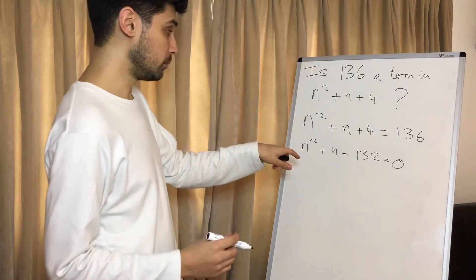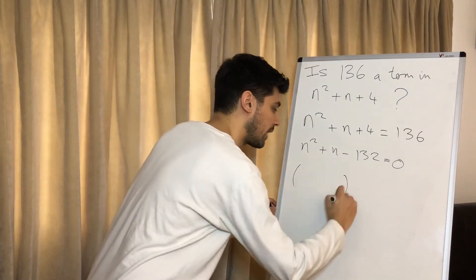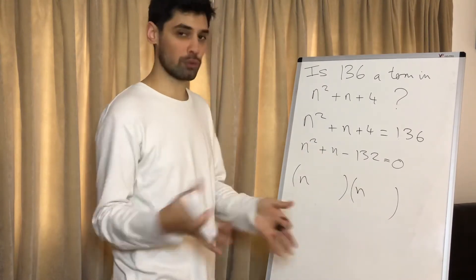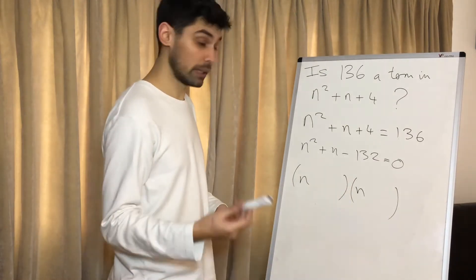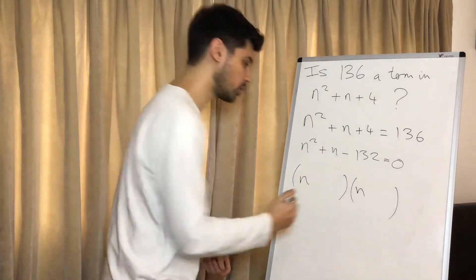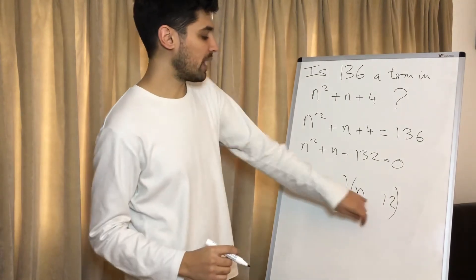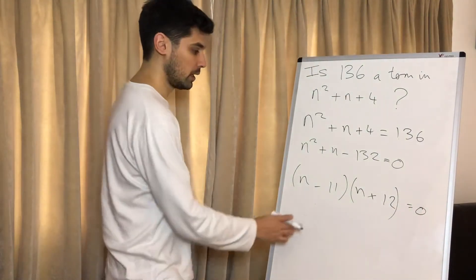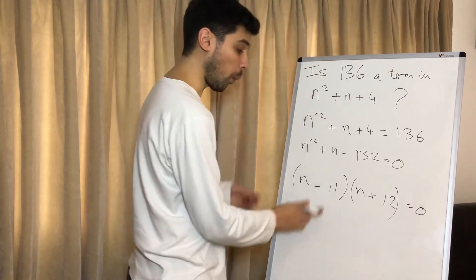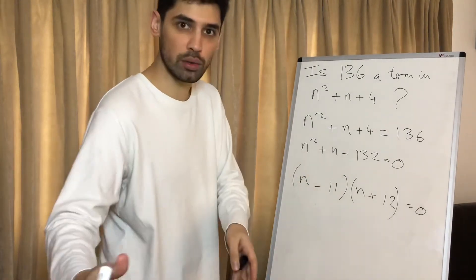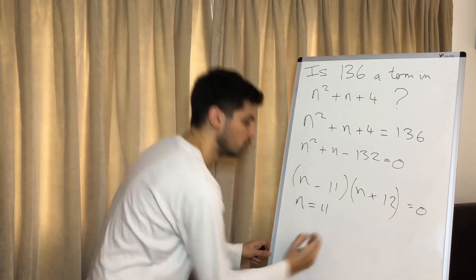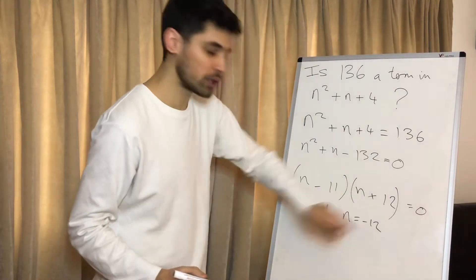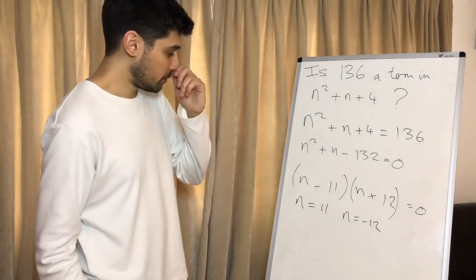We make it equal to 0: minus 136 gives us n squared plus n minus 132 equals 0. When factorising, we write two brackets — n and n — and find two numbers that multiply to make 132 and add or subtract to make 1. Numbers that times together to make 132: 11 and 12 — can they add or subtract to make 1? Yes. So what combination of 11 and 12 makes positive 1? That's going to be minus 11 plus 12. So our factorised form is (n minus 11)(n plus 12) equals 0.